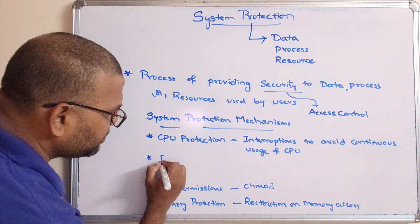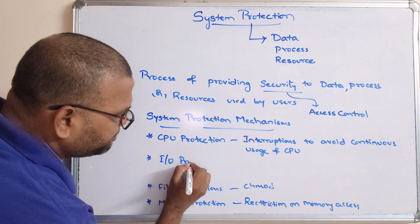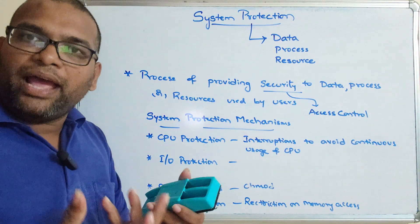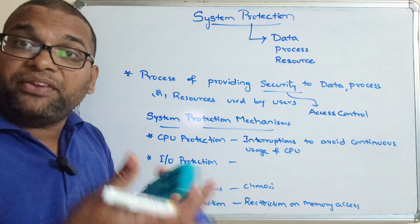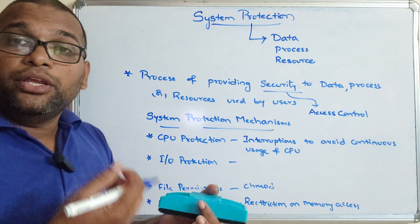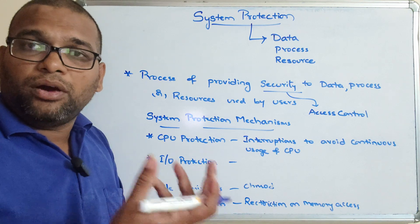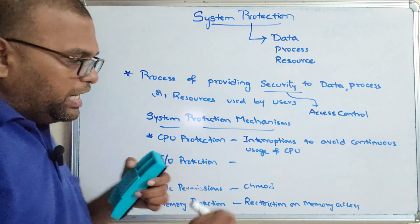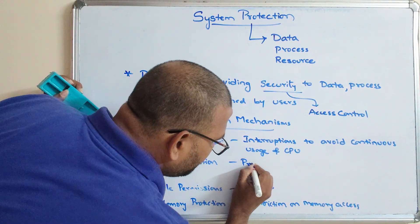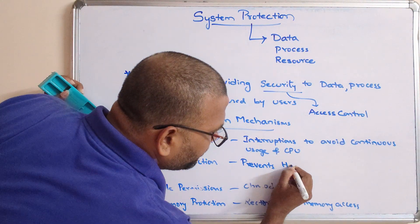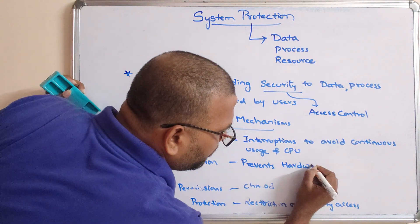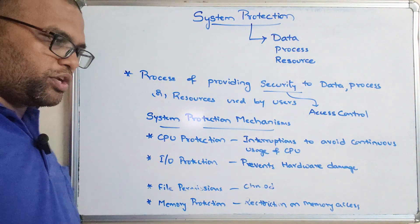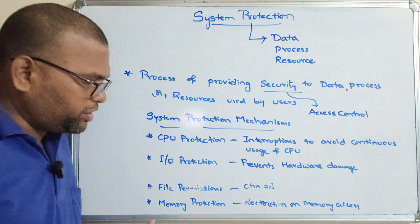The next mechanism is IO protection. It restricts IO access, which may prevent hardware damage. If input and output operations are not used carefully, they can lead to hardware damage. So IO protection prevents hardware damage and ensures the efficient use of IO operations.